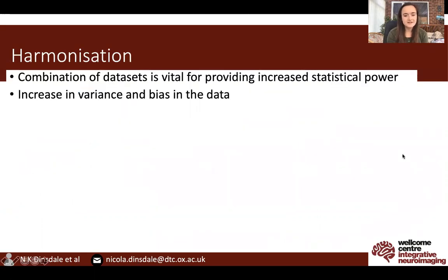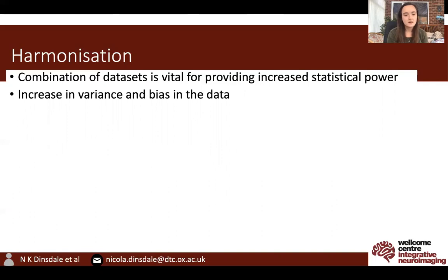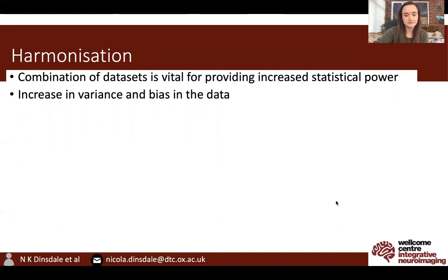The combination of datasets is vital for providing increased statistical power, especially if you wish to consider conditions such as rare neurodegenerative diseases or want to combine data from different data centres. The problem is that combining data produced on different scanners or with different acquisition protocols leads to an increase in variance and bias in the data caused by the scanner effects, not the biological differences.